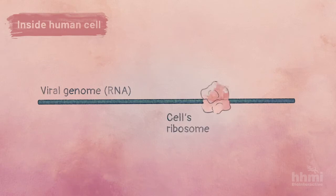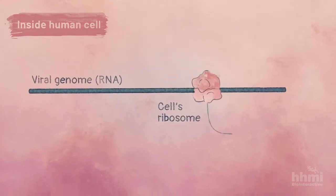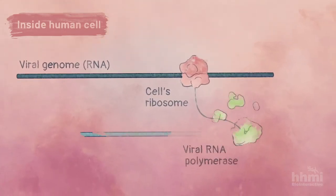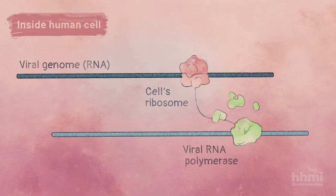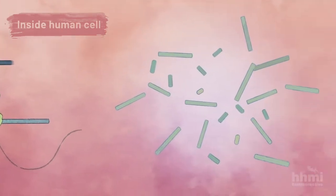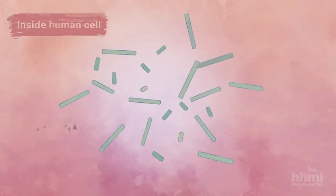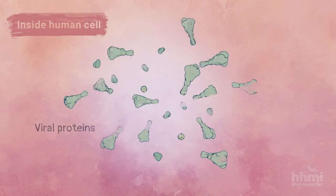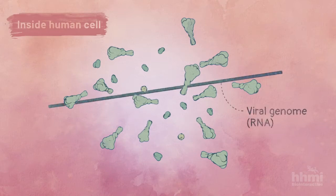The cell's ribosomes translate the virus's RNA into proteins, including viral RNA polymerase. The RNA polymerase transcribes the virus's RNA, making more RNA copies that are translated into proteins. It also makes more copies of the virus's whole genome.